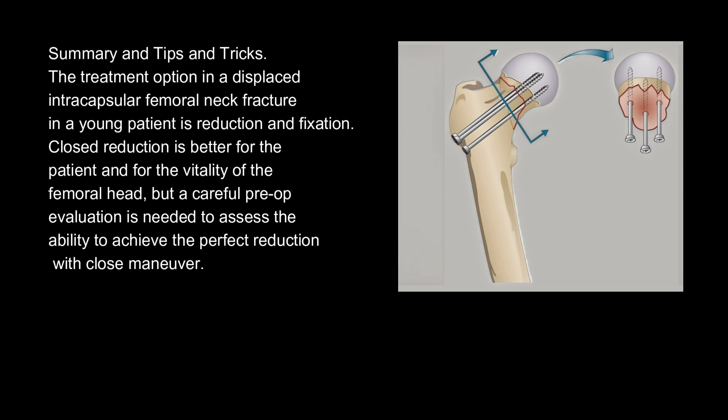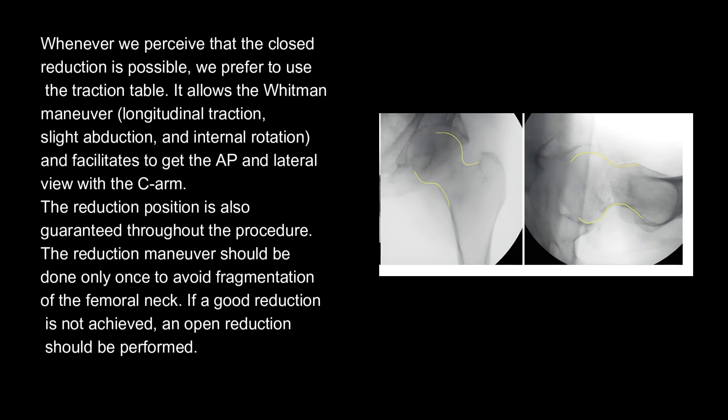The treatment option in a displaced intracapsular femoral neck fracture in a young patient is reduction and fixation. Closed reduction is better for the patient and for the vitality of the femoral head, but a careful pre-op evaluation is needed to assess the ability to achieve perfect reduction with closed maneuver. Whenever closed reduction is possible, we prefer to use the traction table — it allows the Whitman maneuver, longitudinal traction, slight abduction, and internal rotation, and facilitates AP and lateral views with the C-arm. The reduction position is also guaranteed throughout the procedure.